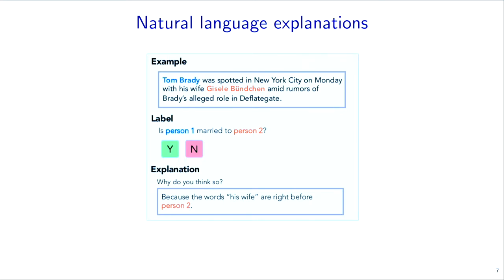So we decided: can we get a little bit more information from the annotator? We asked them to write an explanation showing their work — why did you think your answer was true? In this case someone might write: because the words 'his wife' are to the right of person two. Think about these explanations as general rules of thumb, not necessarily correct or wrong. The challenge is that natural language understanding isn't that easy.